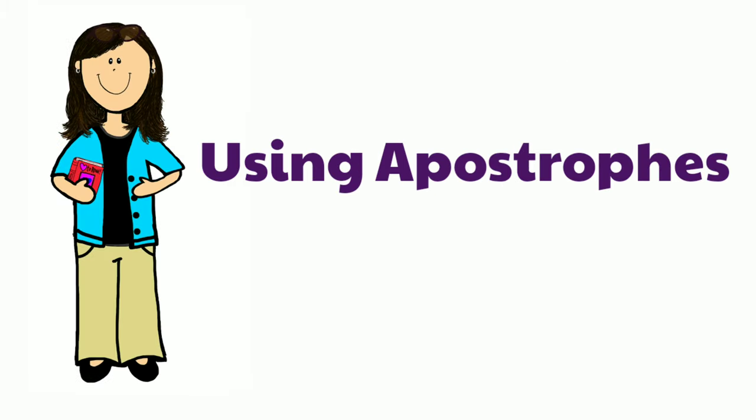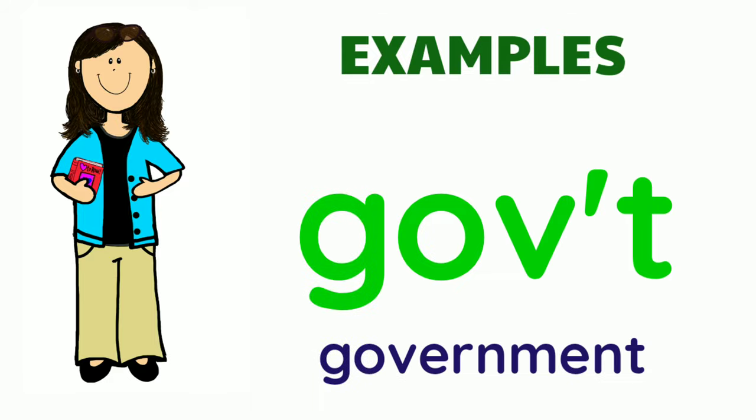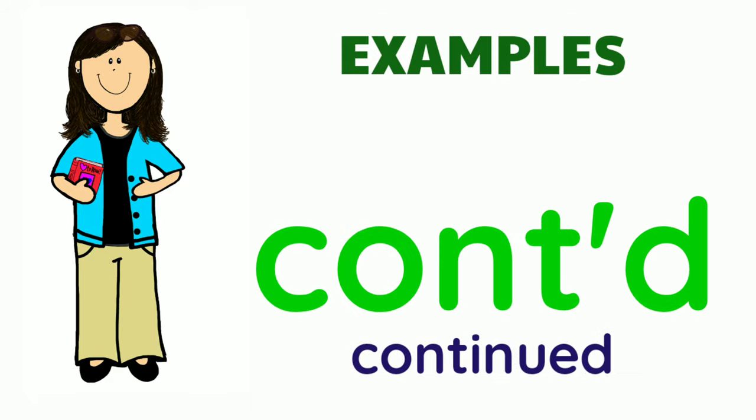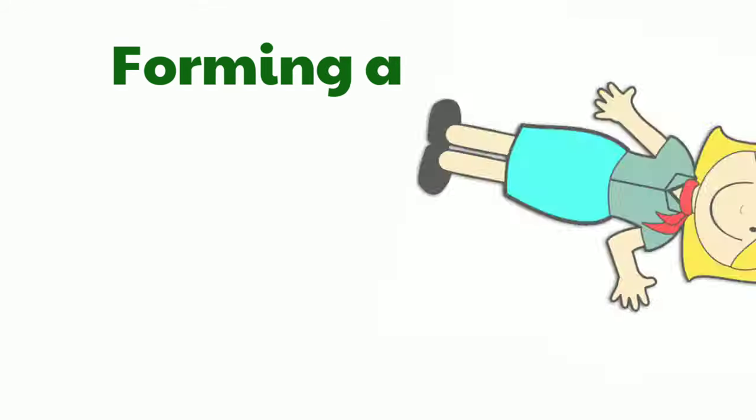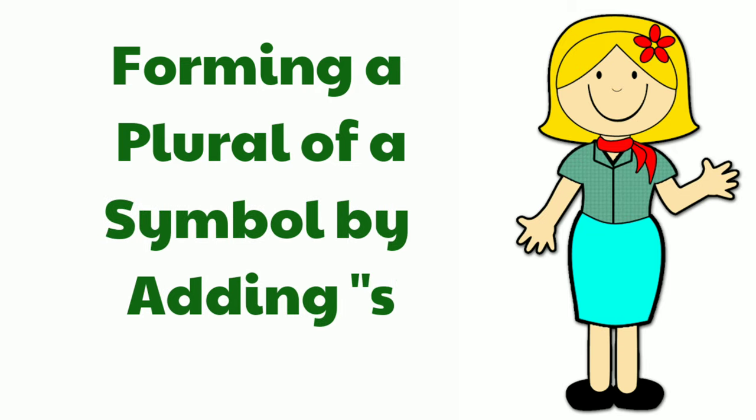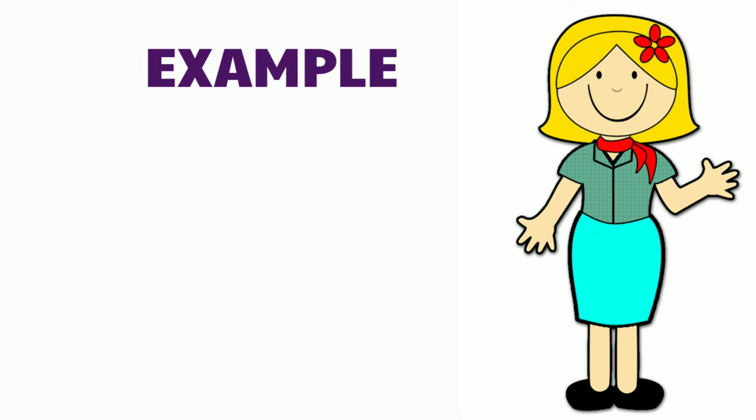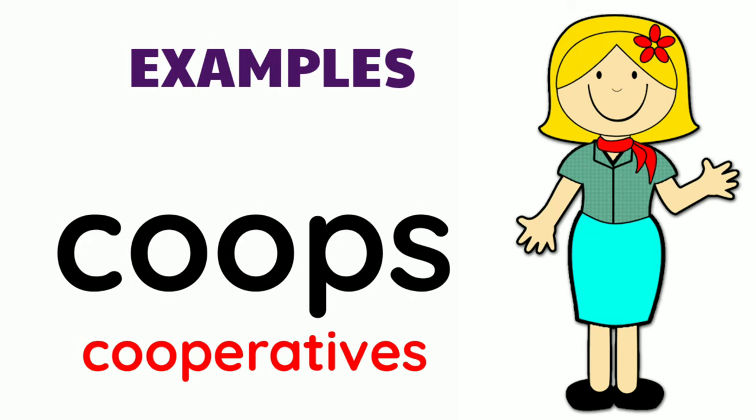Using apostrophes to abbreviate. Examples: government, amount, continued. Forming a plural of a symbol by adding S. Examples: cooperatives, liberals.